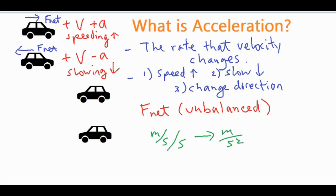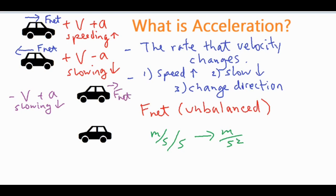If an object is going in the negative direction with a negative velocity but a positive acceleration, that actually means it's slowing down. If you have a velocity of negative 10 and you're adding a positive number to it, it decreases that negative value and brings it closer to zero. This happens because the net force is opposing the motion — the net force is going positive while the car is going in the negative direction, causing it to slow down.